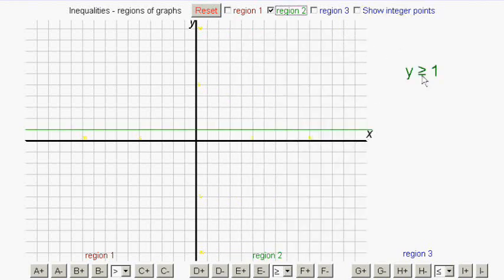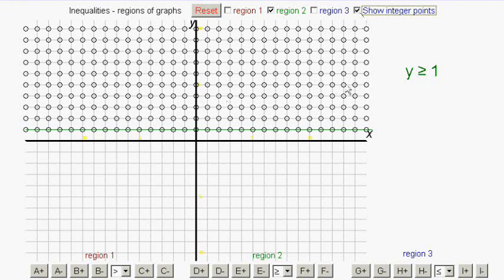If now I wanted to represent the region y is more than or equal to 1, then I would do it by starting off with the line y equals 1. Now if the y value is more than 1, it's going to be points above the line. So if we have a look at what that is, it's all those points going to infinity, but here's just a section of that region.